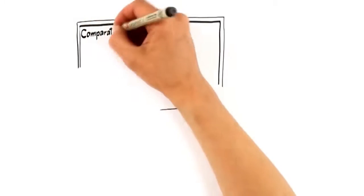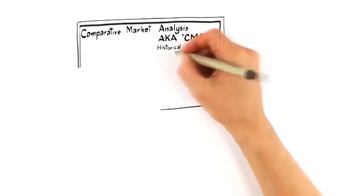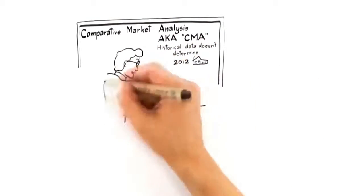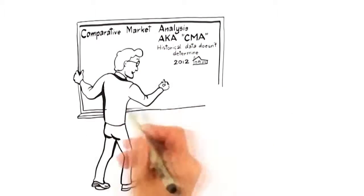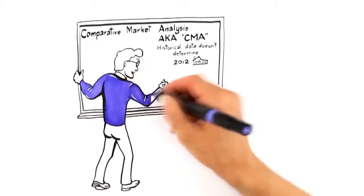Let's start with number one, pricing expertise. Traditionally, agents price homes using what is called a comparative market analysis, also known as a CMA. This establishes the value of your home by comparing it to historical sales.